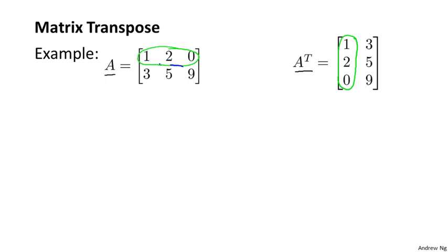And then I'm going to take the second row of A, three, five, nine, and that becomes the second column of the matrix A transpose. And another way of thinking about how to compute the transpose is as if you're taking this 45 degree axis and you're mirroring, or you're flipping the matrix along that 45 degree axis.